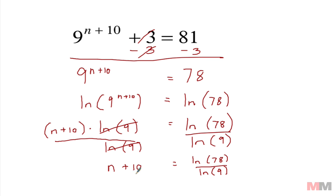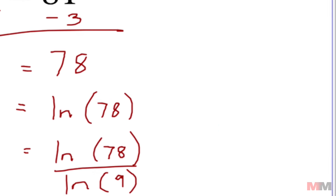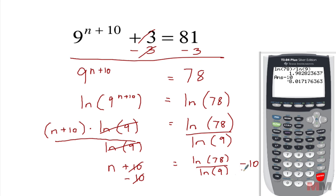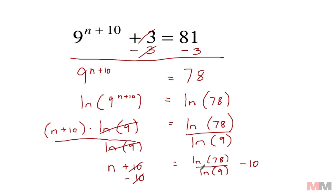So I got one last thing to do right here - subtract 10 on both sides. These two cancel off and now we got n all by itself: n equals the natural log of 78 divided by the natural log of 9 minus 10. Take out your handy calculator: the natural log of 78 divided by the natural log of 9, do that first, enter, minus 10. And we'll just round our answer to the nearest tenth: negative 8.0.